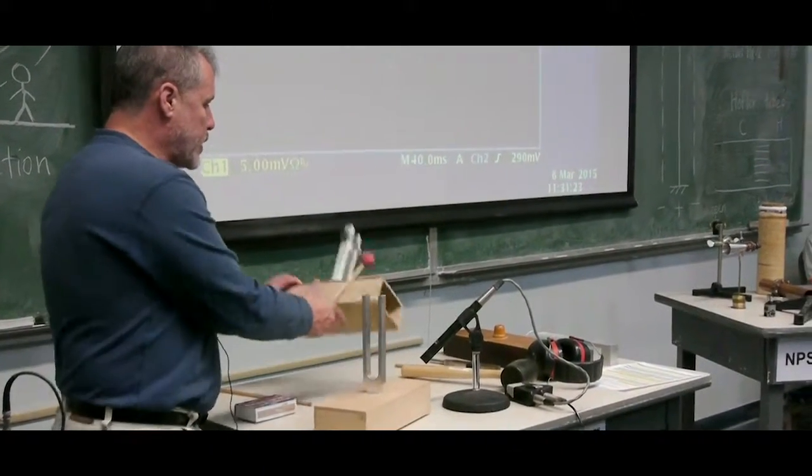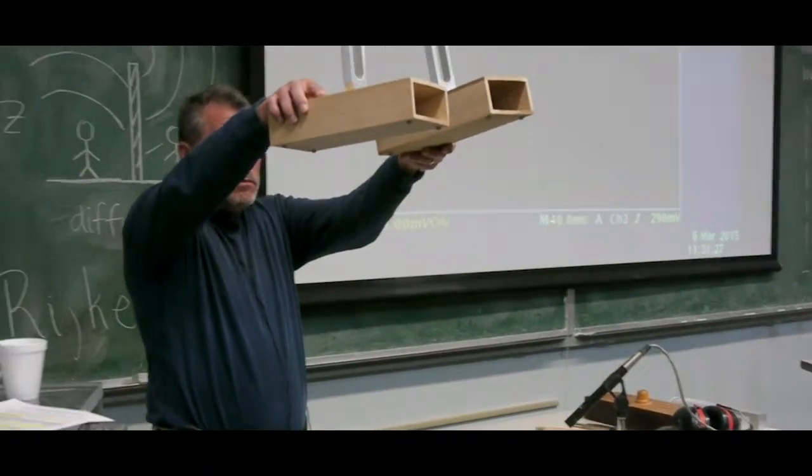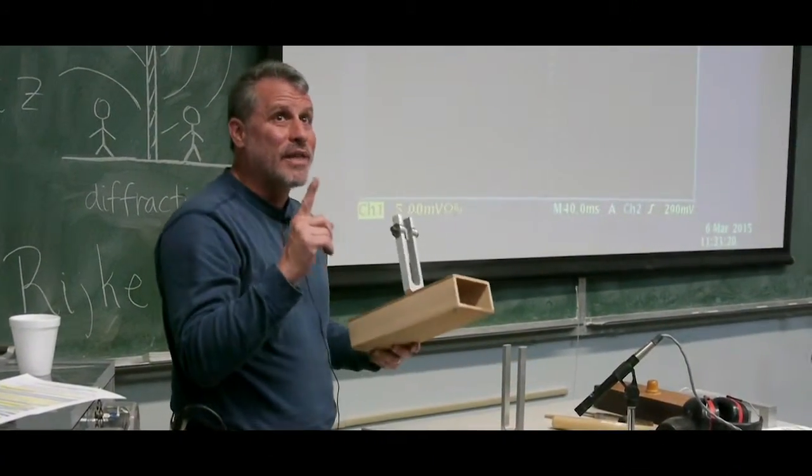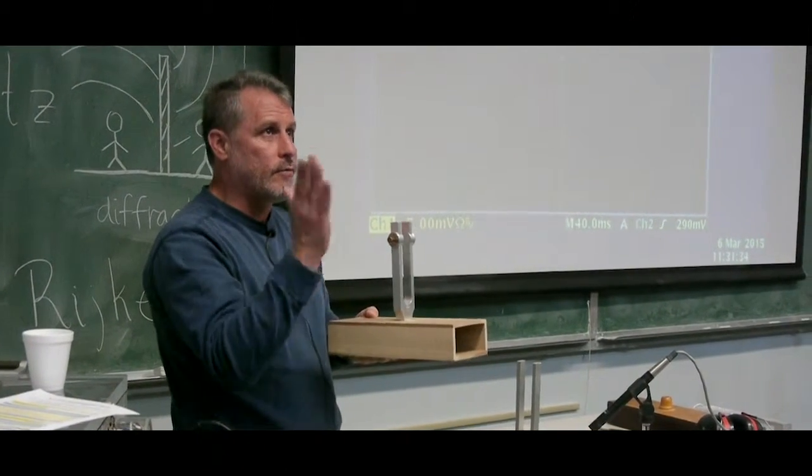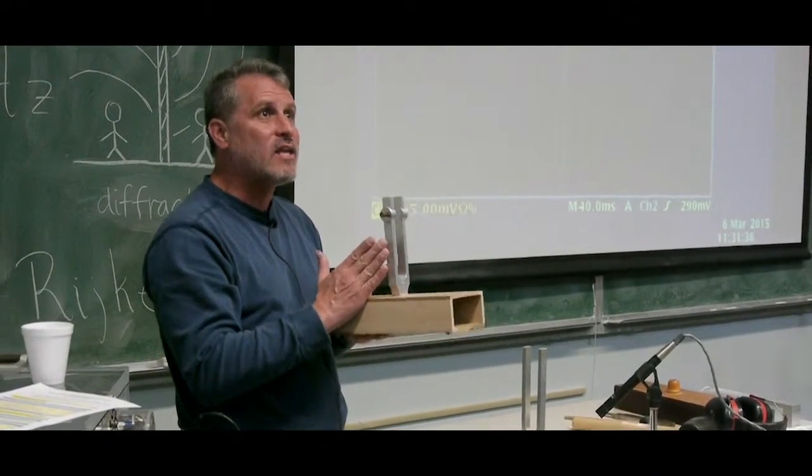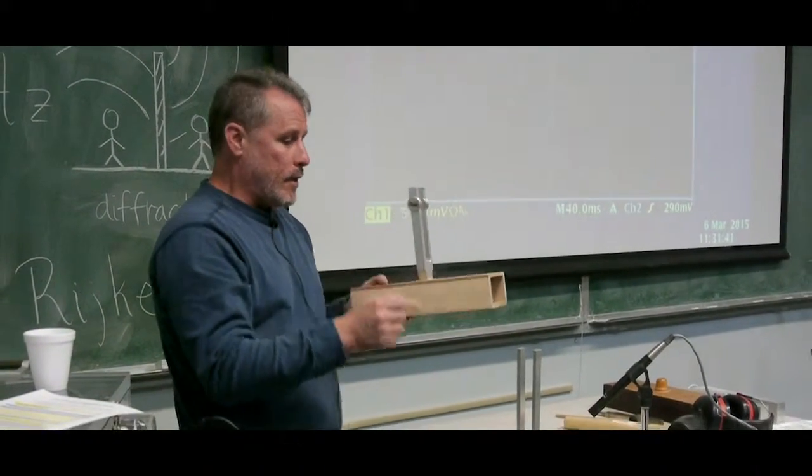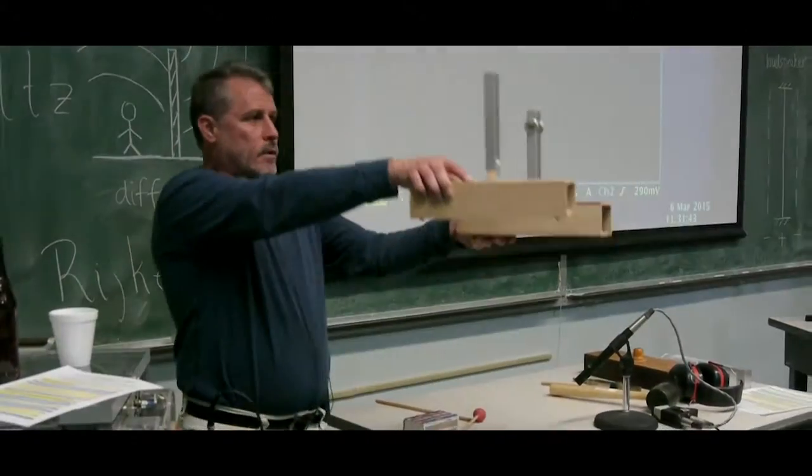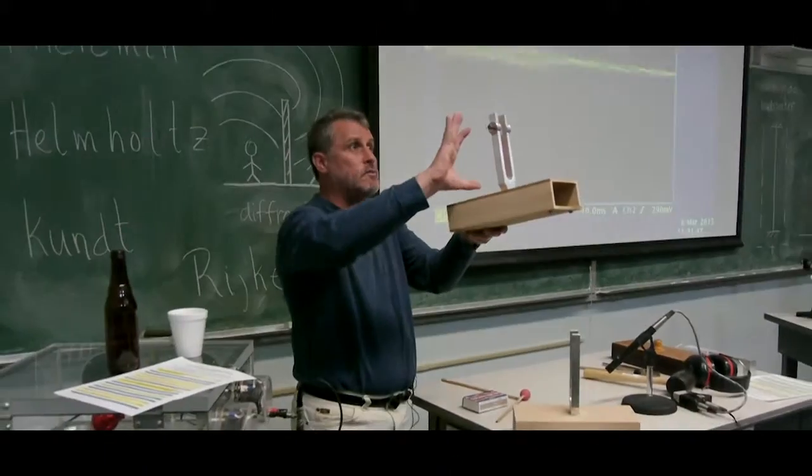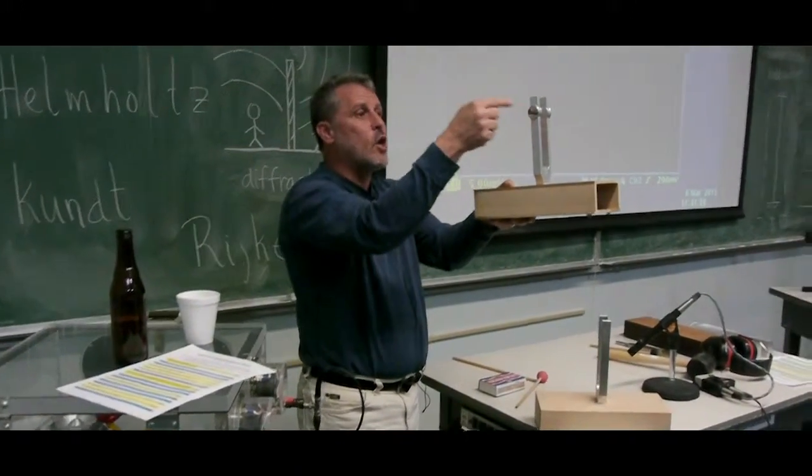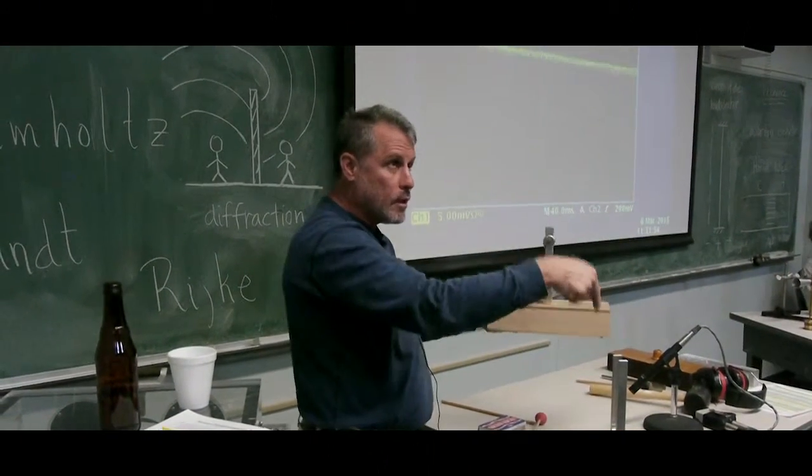I have here another tuning fork and they look different, right? They are acoustically, however, the same. The tuning fork resonant frequency is determined by the length of the prongs and the mass of the prongs. Now this is a shorter tuning fork so its pitch would be higher, but it's loaded at the end so that reduces the pitch and brings it to be of the same pitch as this one.